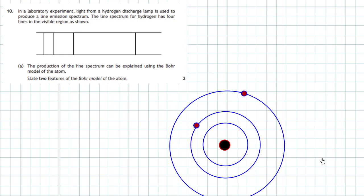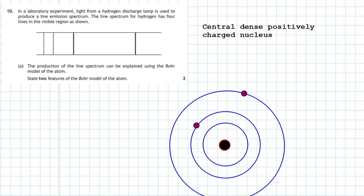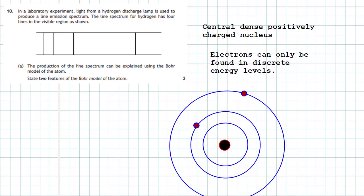Bohr said that the central part of the atom was a strong positively charged nucleus, and surrounding the nucleus were orbits where electrons could exist. We can sum this up: first, Bohr suggested a central dense positively charged nucleus. Second, electrons can only be found in discrete energy levels — like books on a bookshelf, electrons must appear in the energy levels and only in the energy levels.